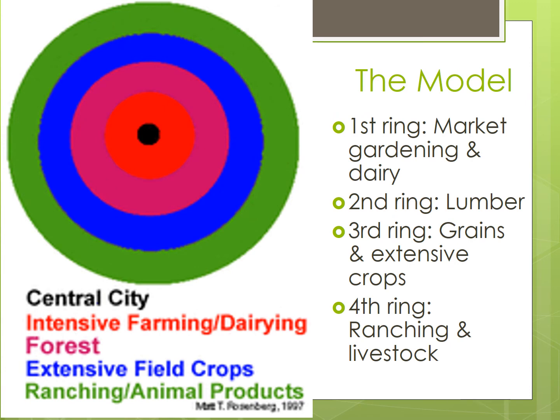Von Thunen developed this model in 1826, when he noticed that as he moved farther away from the city, one commodity or crop gave way to another without any real visible change in soil, climate, or terrain. In the first ring of his model is horticulture or market gardening, as well as dairying.